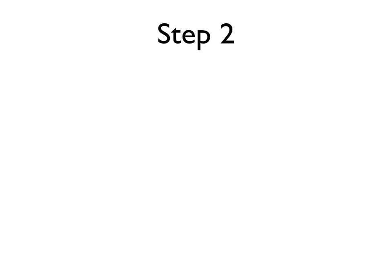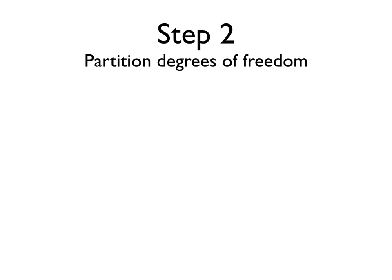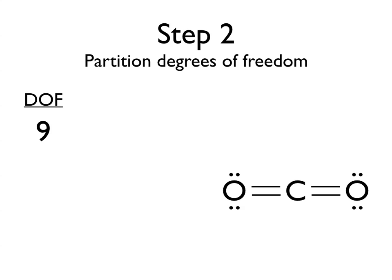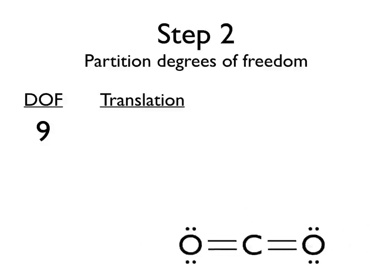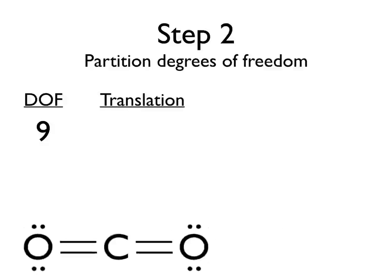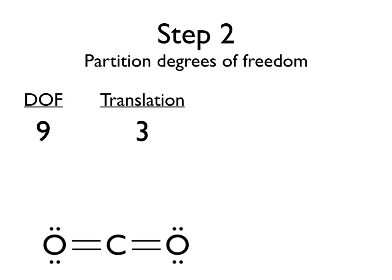Now that we know CO2 has 9 degrees of freedom, we can partition those into different means of motion. The first ones are translations. Because this is a gaseous molecule, it can move around freely in space in 3 directions: an x direction, a y direction, and a z direction. That means we've got 3 different means of translation.